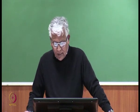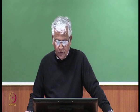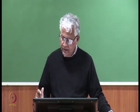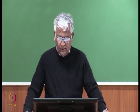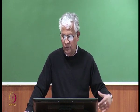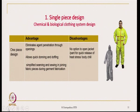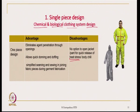The disadvantages: there is no option to open the jacket or pant for quick release of heat stress or body chill. Since we cannot take out the jacket or pant separately, we have to remove the entire garment. Since the openings are not there, heat stress can develop quickly. This design is mostly used for chemical or biological clothing systems where you want the agent not to penetrate the human body.